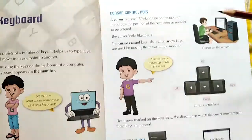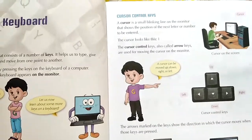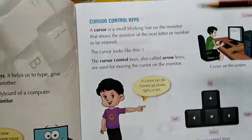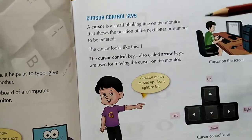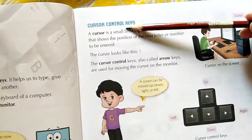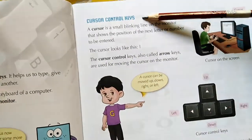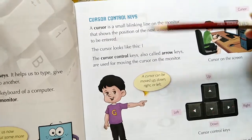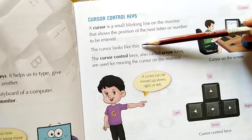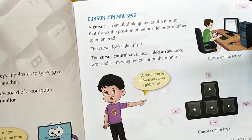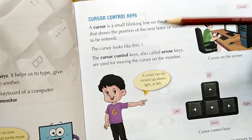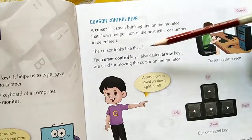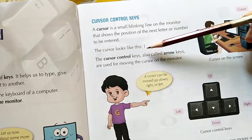Assalamu alaikum students. In the last lecture you learned about the keyboard, and now we will learn about the several keys of the keyboard. First is cursor control keys. The cursor is a small blinking line you have seen on the computer which is always blinking. When you press any letter, it will be written where this line is shown.